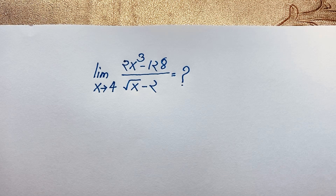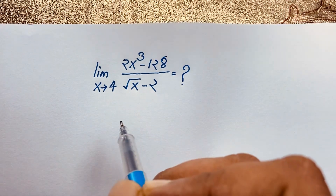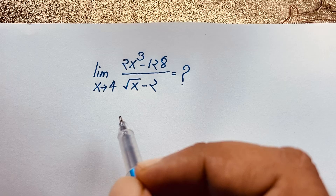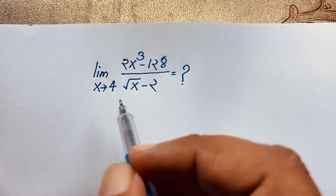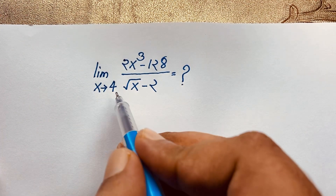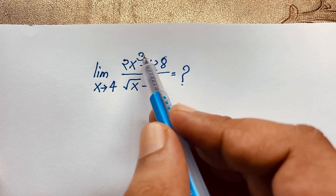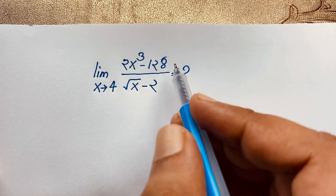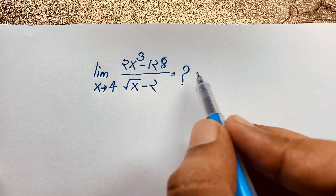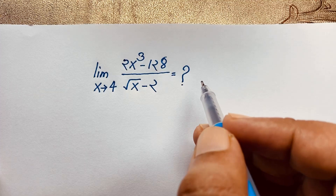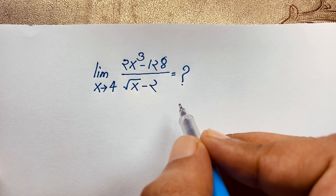Hello everyone, welcome to my YouTube channel. Today we are solving a different maths problem. It is a limit question: limit x tends to 4 of (x³ - 128) over (√x - 2). How to solve this interesting maths problem?